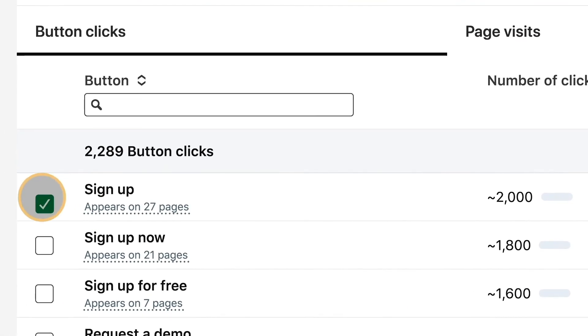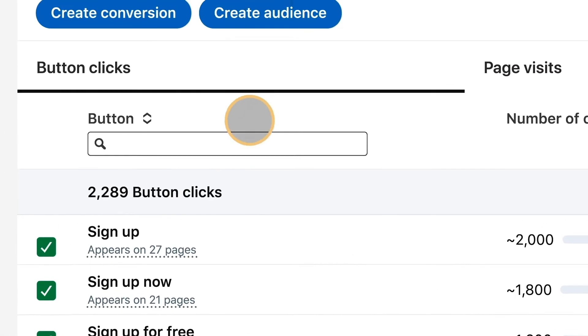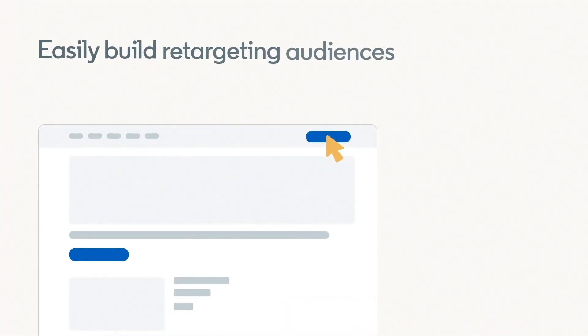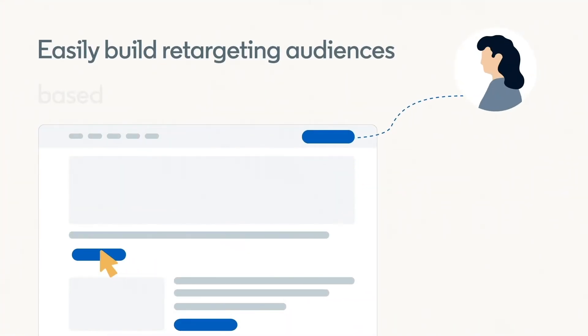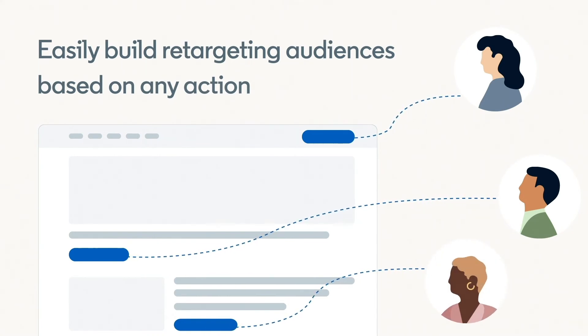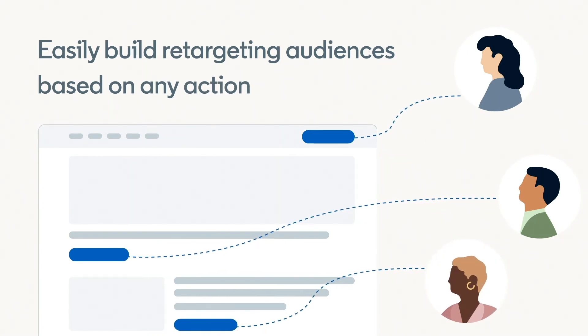Check one or multiple actions and turn them into an audience or a conversion in one click. Here are the top use cases for using website actions. 1. Easily build retargeting audiences based on any action or group of actions. Test out different buyer segments and optimize for the one that works best.